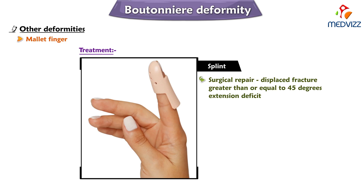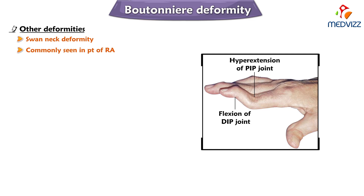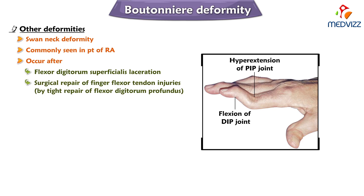Another important condition is swan neck deformity, which is a finger deformity mainly caused by hyperextension of the proximal interphalangeal joint and flexion of the distal interphalangeal joint. It is commonly seen in patients with rheumatoid arthritis, and can also occur after flexor digitorum superficialis laceration or tight surgical repair of the flexor digitorum profundus. This is what we need to know about boutonniere deformity, mallet finger, and swan neck deformity.